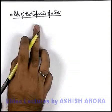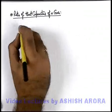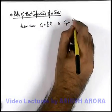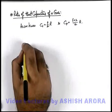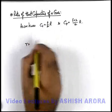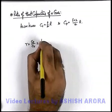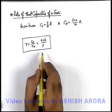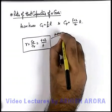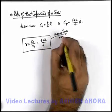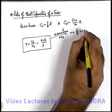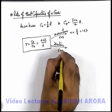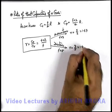Now we can analyze the ratio of specific heat capacities of a gas. We know Cv = (f/2)R and Cp = (f+2)/2 · R. The ratio γ = Cp/Cv = (f+2)/f, which depends on degrees of freedom. For a monoatomic gas with f = 3, γ = 5/3 ≈ 1.67. For a diatomic gas with f = 5, γ = 7/5 = 1.4. Always remember these values as they are quite useful constants.